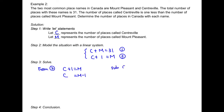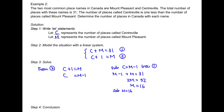Substituting C equals M minus 1 into equation 1, we get M minus 1 plus M equals 31. Collecting like terms and putting the constant on the right, then dividing by 2 on both sides, we find M equals 16. Substituting M equals 16 back into equation 3 gives C equals M minus 1, which equals 15.